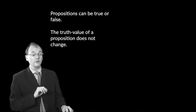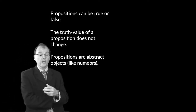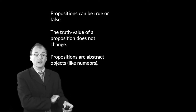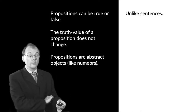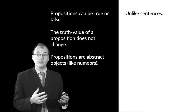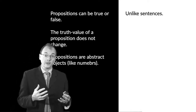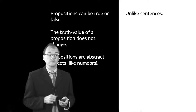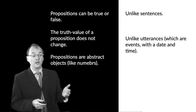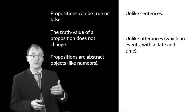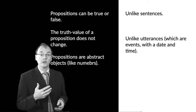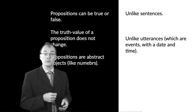A third feature of propositions is that they're abstract objects, like numbers. So based on what we were talking about earlier, we can see that propositions are unlike sentences, because sentences are not the right kind of thing to be true or false. And propositions are unlike utterances, because utterances are not abstract objects — they're events with a date and time, things that make up your life.